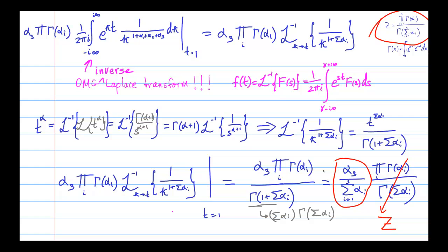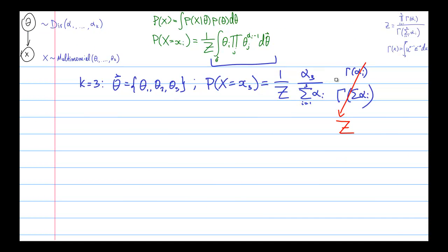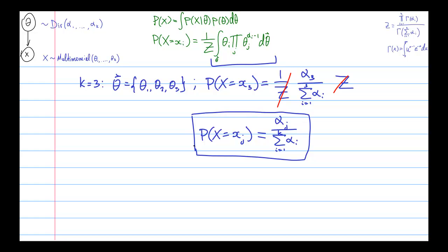Okay, so this is the answer to our integral. It's the partition function times this alpha 3 divided by the sum of alphas. Now remember that the expression that we were trying to compute had the 1 over the partition function in front of it. And so actually that cancels the factor of the partition function that we got. And so the answer is just alpha 3 divided by alpha 1 plus alpha 2 plus alpha 3. And this procedure of course works for an arbitrary finite k. And so this is our final answer. The probability that x takes on a particular value little x sub j is alpha sub j divided by the sum over the k alpha parameters of the Dirichlet distribution.